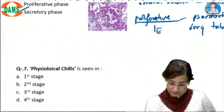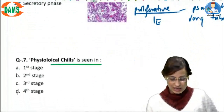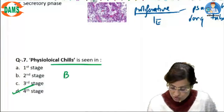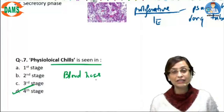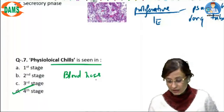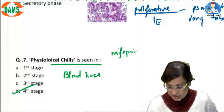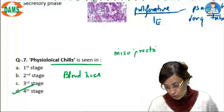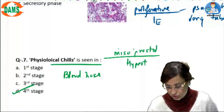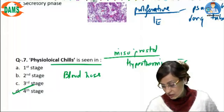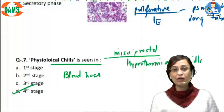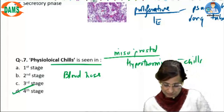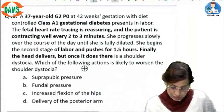Physiological chills are seen in the fourth stage of labor because of blood loss as well as drugs given in the third stage of labor. One drug notorious for causing chills is misoprostol. Please remember misoprostol will cause hyperthermia and chills. The chills seen in the fourth stage of labor are because of blood loss or could also be because of drugs given in the third stage.